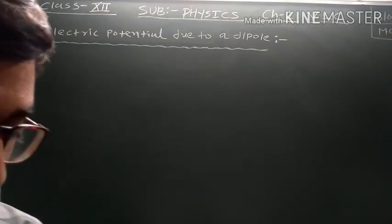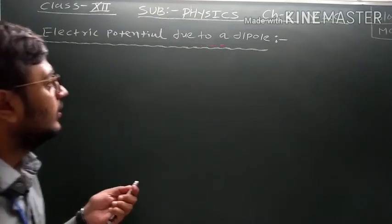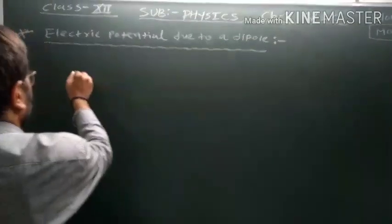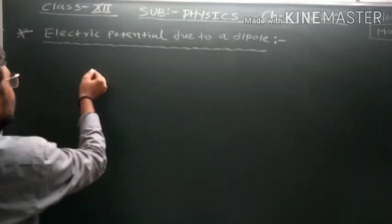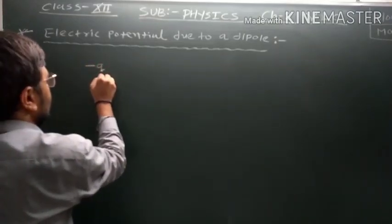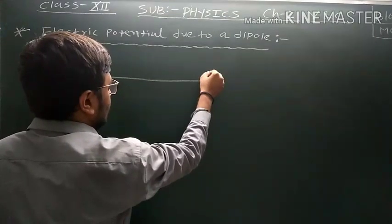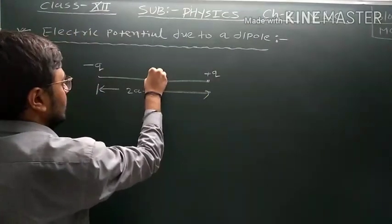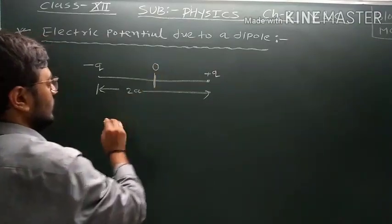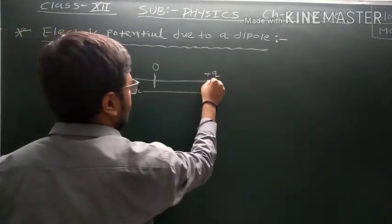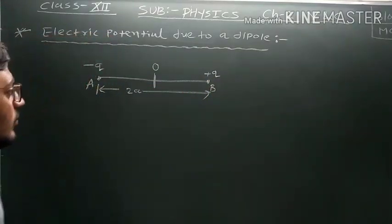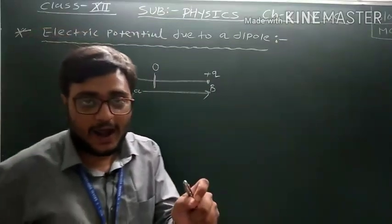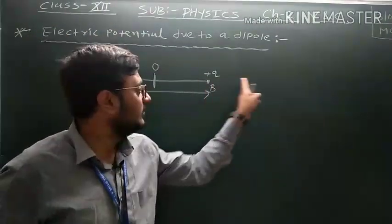Our next topic is electric potential due to a dipole. A dipole is made from two charges, plus Q and minus Q, separated by some distance 2a. This is the midpoint of the dipole, with point A and point B at either end. We want to find out the electric potential due to the dipole at the axial point of the dipole.